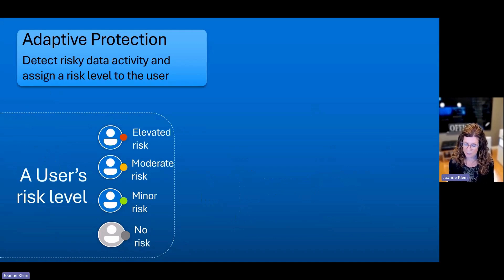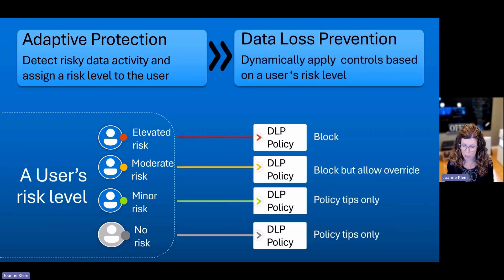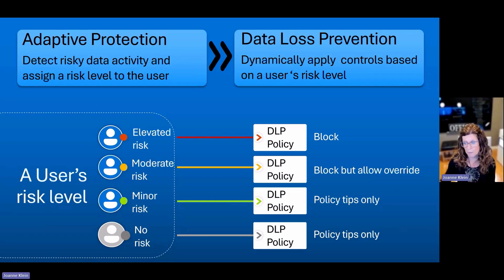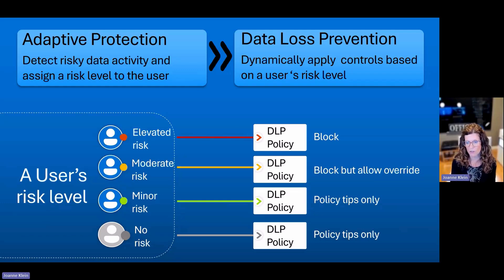Once a user's risk level is determined — Jane Doe elevated risk in this case — certain data loss prevention policy actions can be taken dynamically. If a user is at no or minor risk, you might just show DLP policy tips. If they go to moderate, you might block some action but allow the end user to override it. At the most extreme case of elevated risk, you might just outright block it, not allowing any override at all. So it's dynamically adjusting the DLP policy action taken based on the user's risk level.